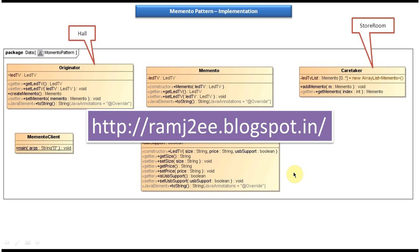I hope you understood this implementation very clearly. I have put together all the sample code in my blog called RamJT — you can just visit this site and get the sample code. This is about the Memento design pattern implementation. Thanks for watching.